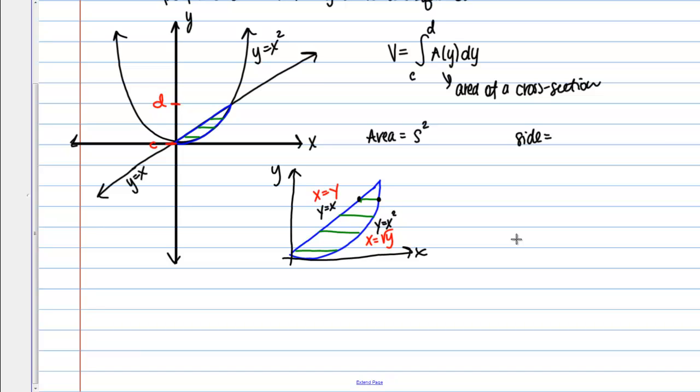So then I can write an expression for the side of the square doing the right function minus the left function. And I'm going to get root y minus y.